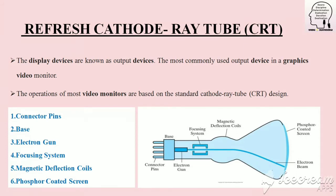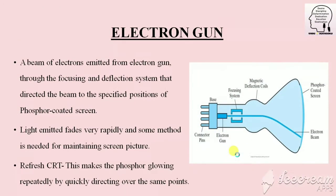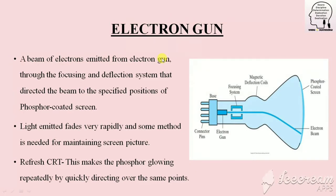We can see the resolution and the electron beam. What is the electron gun? We produce the beam of electrons — it is a focusing system. The magnetic deflection provides an effect to the electron beam, creating a dot on the phosphor coated screen, producing an image.